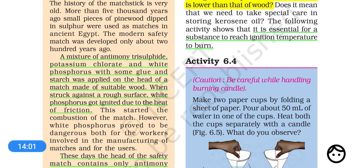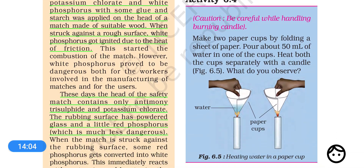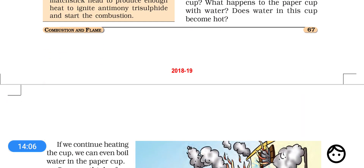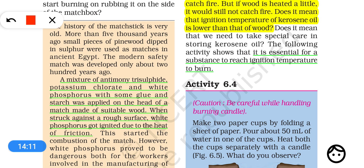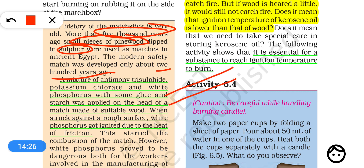Now let's talk about a very interesting thing — matchsticks. Even 5000 years ago, pieces of pine wood dipped in sulfur were used as matchsticks in Egypt. Around 200 years ago, the modern matchstick was developed. At that time, the matchstick head contained five things: antimony trisulfide, potassium chlorate, white phosphorus, glue, and starch.